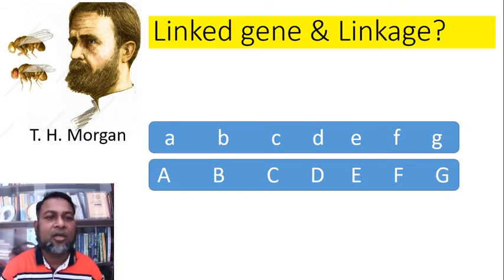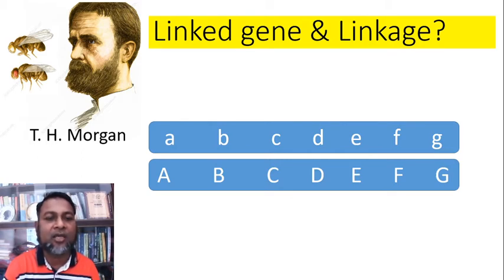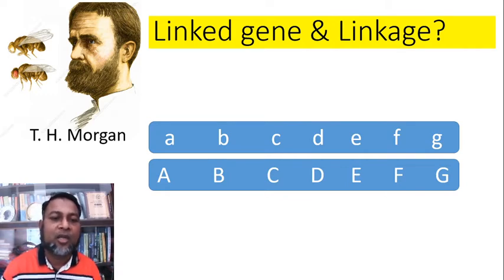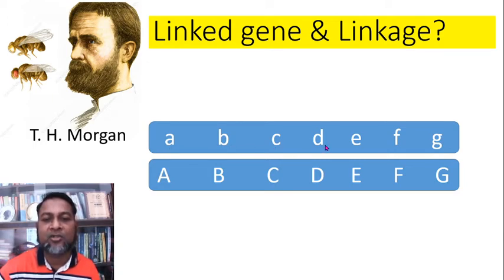At first, I explain linked genes and linkage. This phenomenon is discovered by T.H. Morgan, who worked on Drosophila — a very little fruit fly. Linked genes are genes located in the same chromosome. In this figure, we find that in this chromosome, genes small a, b, c, d, e, f, and g are all recessive genes located in the same chromosome. These are linked genes. On the other hand, in this chromosome, capital A, B, C, D, E, F, and G are linked genes — all are dominant genes.